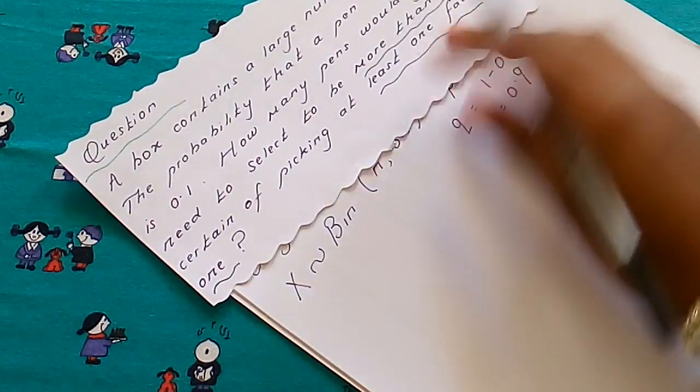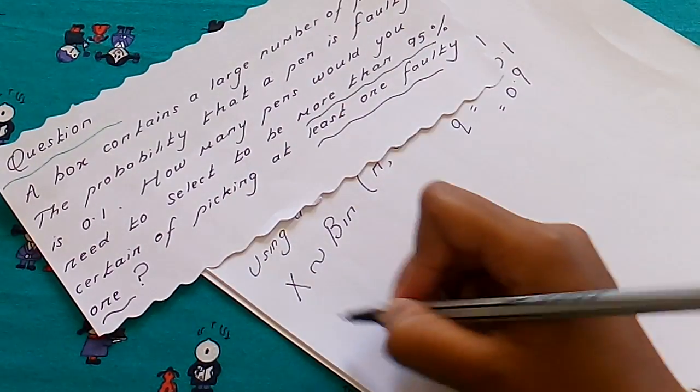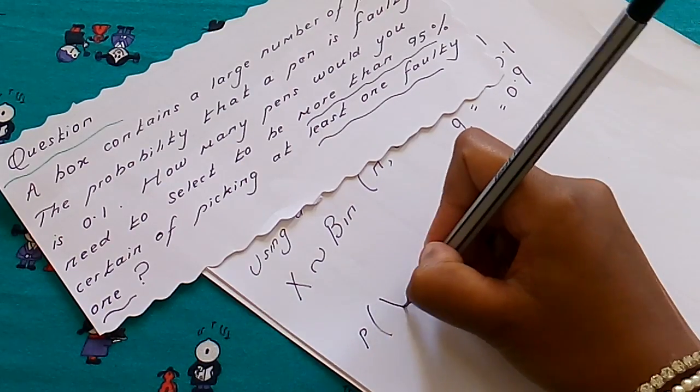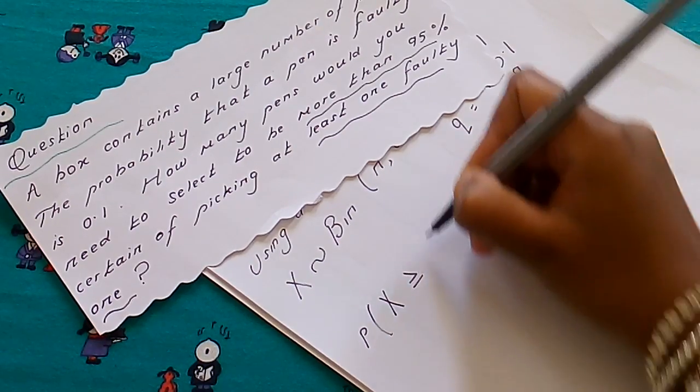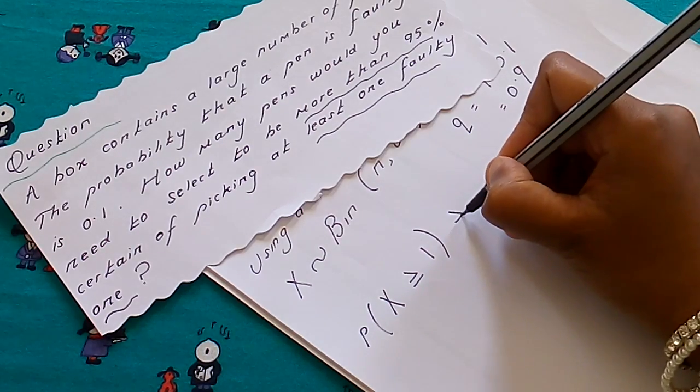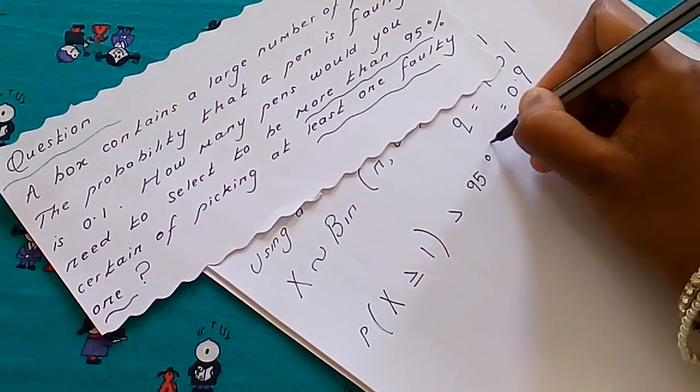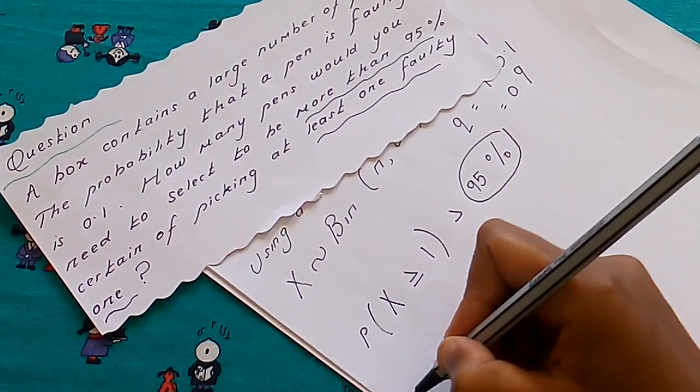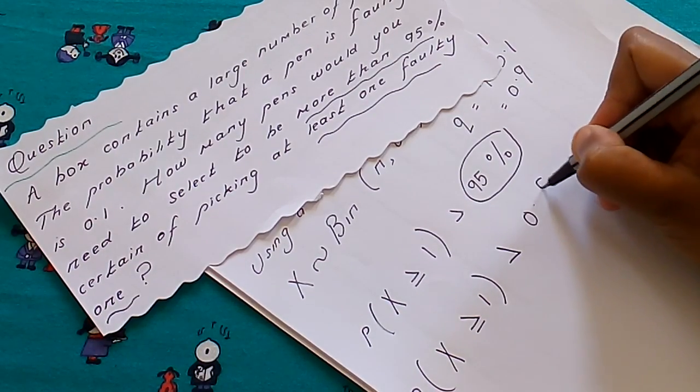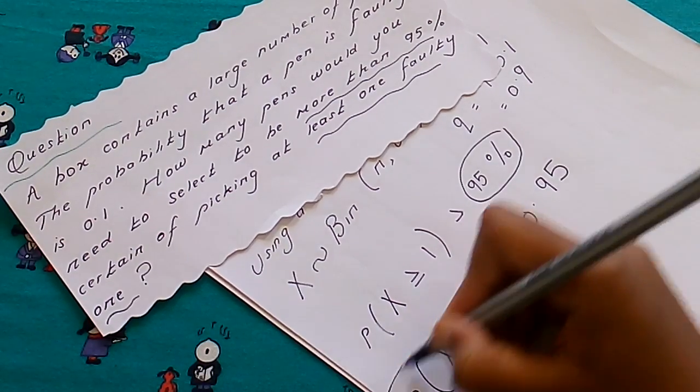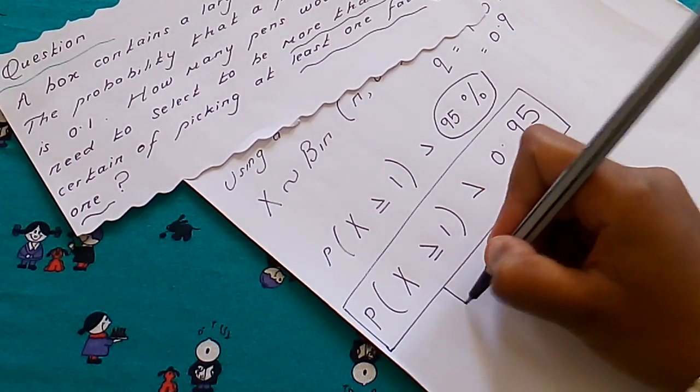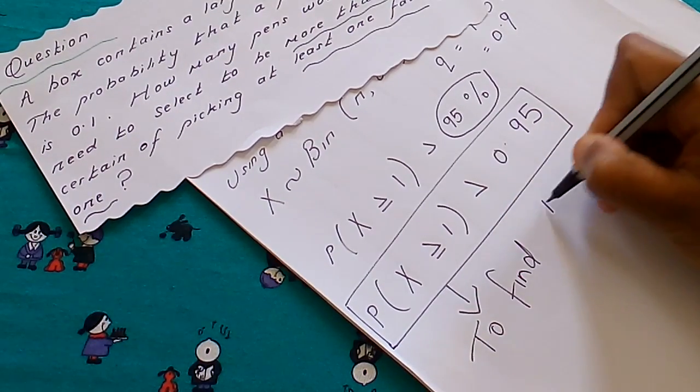So how are we going to write this? The first thing we need to write is, what we want is probability of at least 1 faulty. So P(X ≥ 1) is more than 95%, is greater than 95%. Now this 95% we can write as P(X ≥ 1) is greater than 0.95. Now we need to use this to find n.